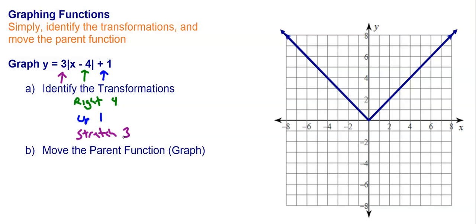Just like on the last example where we handled the inversion first, we're going to do the stretch first. What I'm going to do is multiply all my y-values by 3 — you only need to get a couple of those. For example, here my y-value is 1, so 1 times 3 is 3. Here my y-value is 2, so 2 times 3 is 6. If I go here, my y-value is 3, but 3 times 3 is 9 — I'm off the graph already. Going the other way: 1 times 3 is 3, and 2 times 3 is 6. So here's the graph with a stretch of 3.